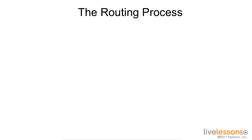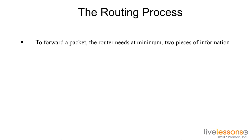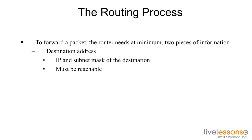In order to understand the routing process, we need to understand how a router forwards a packet. To forward a packet, the router needs at minimum two pieces of information. The first piece of information is the destination address — it needs the IP and subnet mask of the destination, and that destination must be reachable.